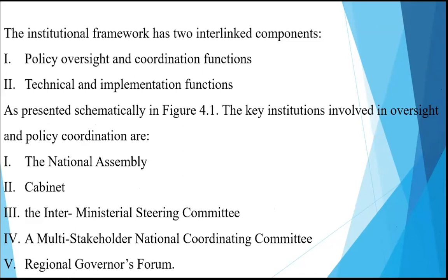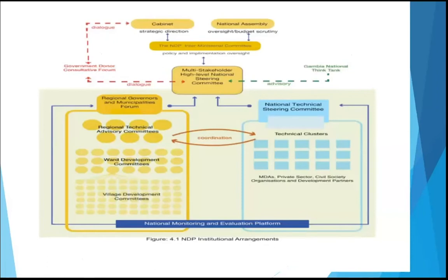The NDP framework had two interlinked components: first, policy oversight and coordination functions; and second, technical and implementation functions. The key institutions involved in oversight and policy coordination are the National Assembly, the cabinet, the Inter-Ministerial Steering Committee, a multi-stakeholder National Coordinating Committee, a Regional Governance Forum, and Regional Technical Advisory Committees. Their interconnections and institutional arrangements are presented schematically in the document.